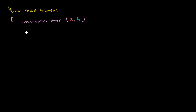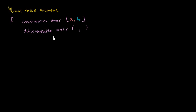Now let's also assume that it's differentiable over the open interval between a and b. It's OK if it's not differentiable right at a or right at b. Differentiable just means that there's a defined derivative — you can actually take the derivative at those points. So those are the constraints we're going to put on ourselves for the mean value theorem.